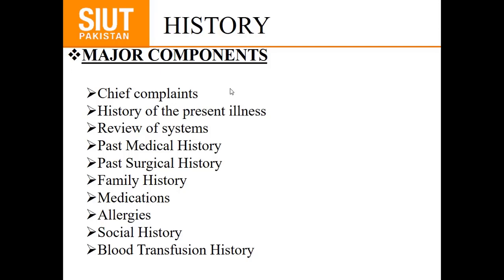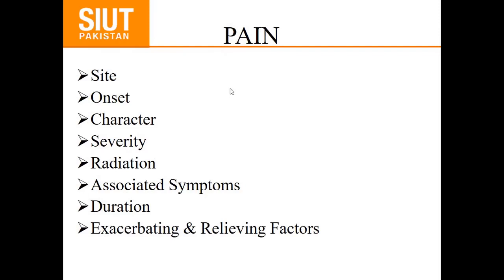The most common symptom we encounter is pain. For pain, we must ask about the site, onset, character, severity, radiation, associated symptoms, duration, exacerbating factors, and relieving factors. The first and most common pain is renal pain. The site of renal pain is the ipsilateral costovertebral angle, just lateral to the sacrospinalis muscle and just below the twelfth rib.